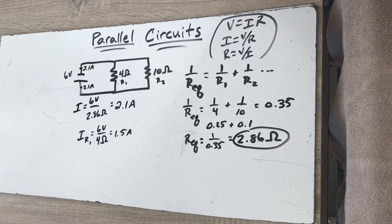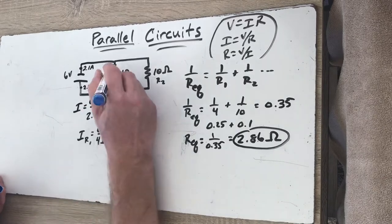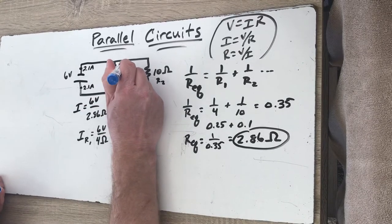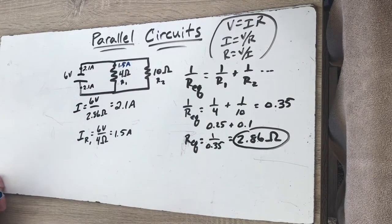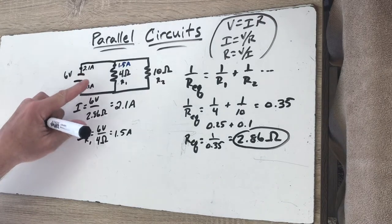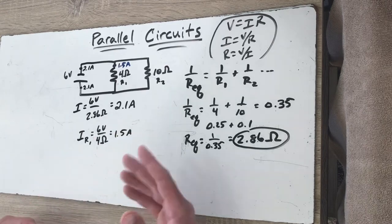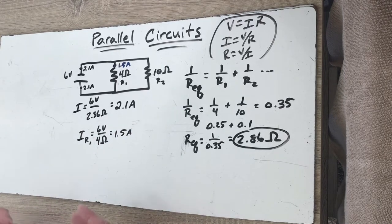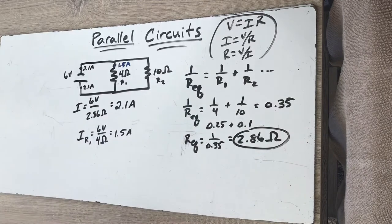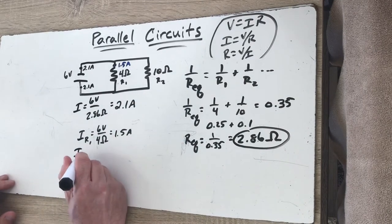So that means that going through this particular pathway right here through that resistor, there's 1.5 amps of current. But there was 2.1 coming out of the battery. That means the current right here splits. Some of that flow goes in one direction, some of the flow goes in the other direction. It all is based on what the flow has to go through in terms of resistance.